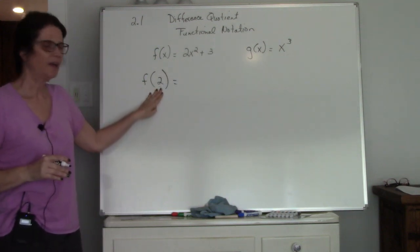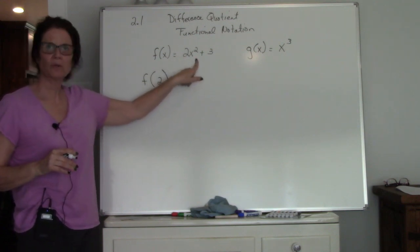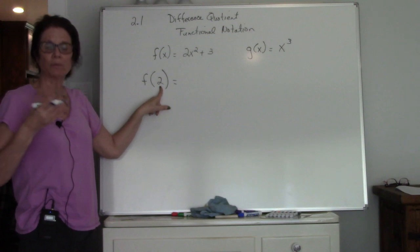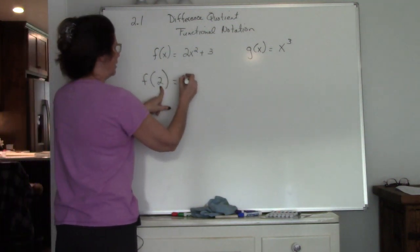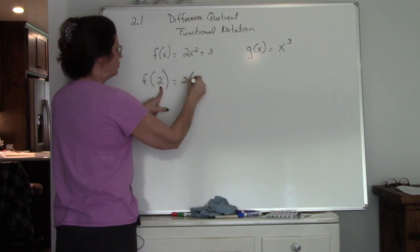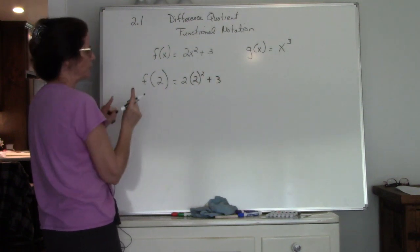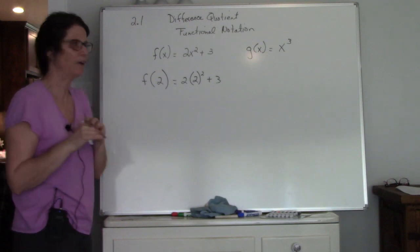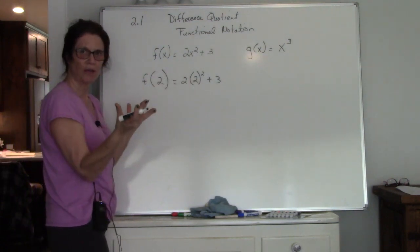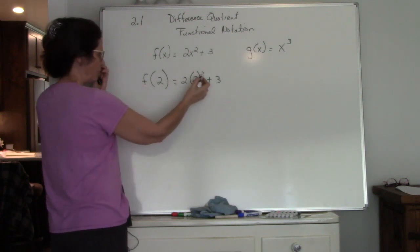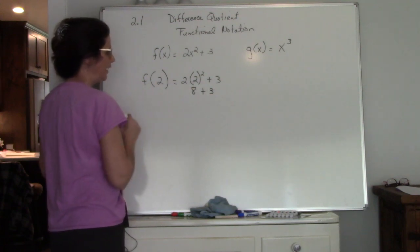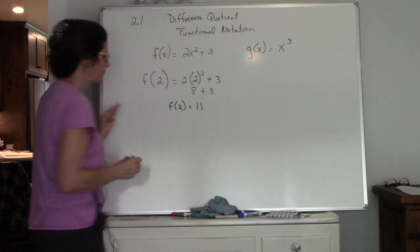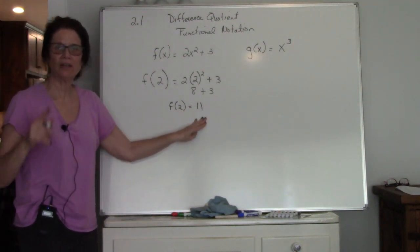When I give you this notation, you should read it as: I'm using the f function, so I'm going to use 2x squared plus 3, and it's asking me to replace x with 2 and then simplify. So I take 2 times 2 squared plus 3. Using order of operations, I do the exponent first: 2 squared is 4, 4 times 2 is 8, and 8 plus 3 is 11.